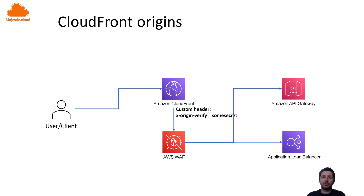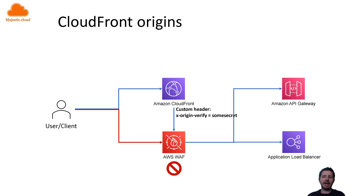On the other hand, if the user tries to access directly without CloudFront — because WAF is integrated with load balancers and API gateways and you can associate them — then the request goes first to WAF, and WAF checks for the secret header. If it's not there, it just denies the request. This is the simple architecture. You can refine it by adding secret rotation, reading the secret from Secrets Manager, and rotating the header secrets.